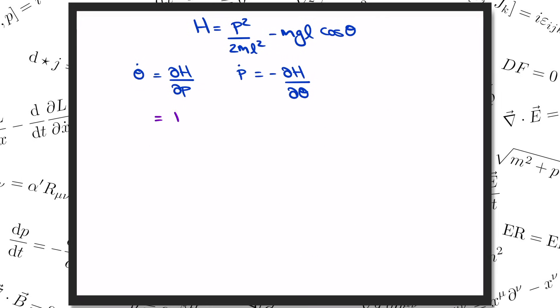The derivative of h with respect to p is just p over mL squared from the first term. For the derivative with respect to theta, we get minus sine theta from the derivative of cosine, times two more minus signs, gives us an overall minus MgL sine theta. So Hamilton's equations tell us that p equals mL squared theta dot, and p dot is equal to minus MgL sine theta.